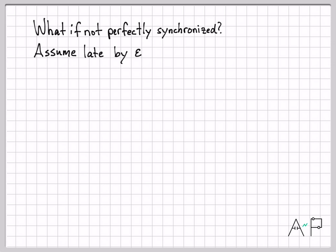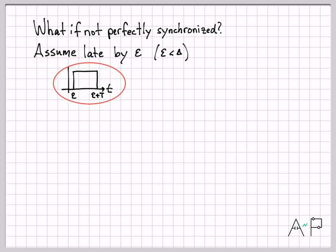Now let's do the same analysis when we're not synchronized. There are two cases — being late or early by some amount — but we'll just do the late case and the pattern will be clear. We assume we're late by some amount epsilon, where epsilon is smaller than delta, so we're within one delta of perfect synchronization. The input rectangular pulse is still width T, just offset by epsilon.